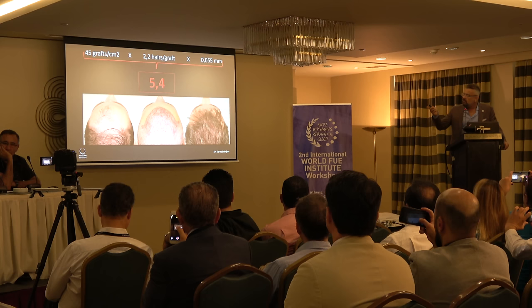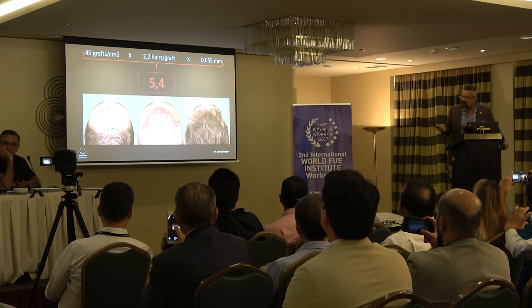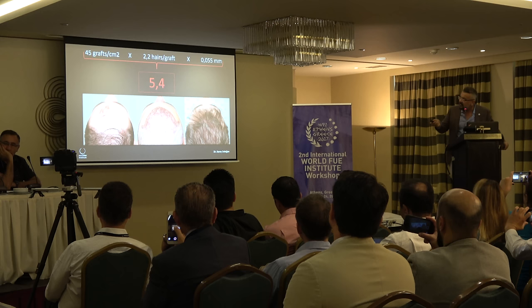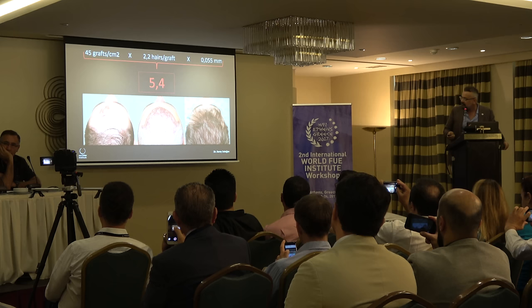Why 5.4? Because when we are placing 45 grafts — which is our normal daily practice density — with an average of 2.2 hairs per follicle, and a caliber of 55 microns (the average European patient hair thickness), we find 5.4. I can show you this case — this is a coverage value of 5.4, one of my cases. It is not perfect coverage; if I make it wet, you can probably see the skin — but it is an acceptable coverage.